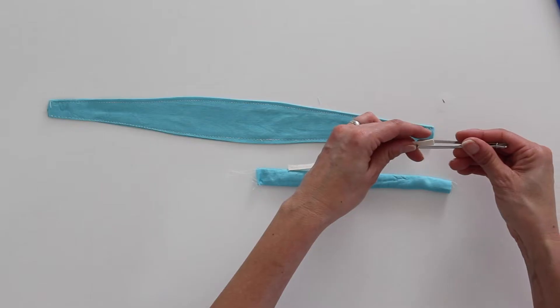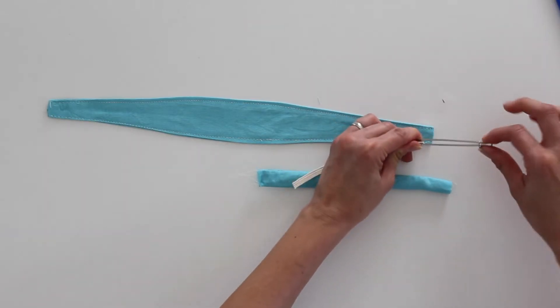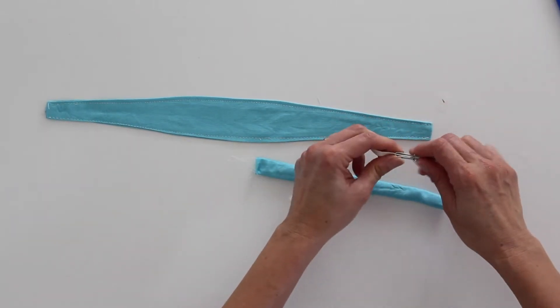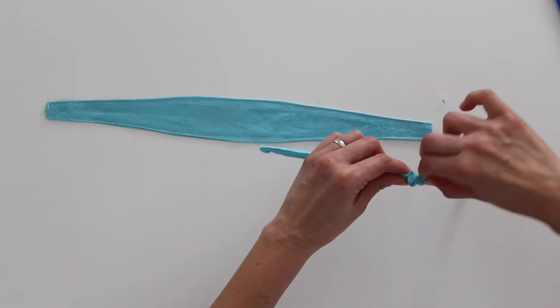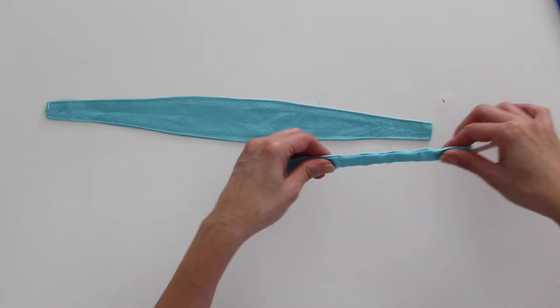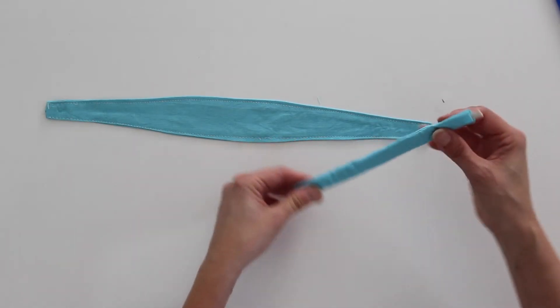And the way you use it is you clamp onto the end of the elastic and push the ring down to hold that tight and then you just thread it through. If you don't have a bodkin, you can also use a safety pin to do this.